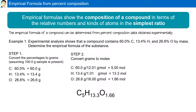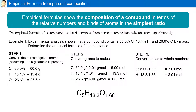Subscripts in formulas cannot be decimals, so the third step is to convert moles to whole numbers by dividing all moles by the lowest mole value. Carbon: 5 divided by 1.66 is 3.01. Hydrogen: 13.3 divided by 1.66 is 8.01. Oxygen: 1.66 divided by 1.66 is 1. Our new formula is C3H8O.